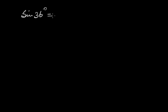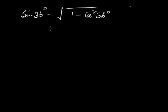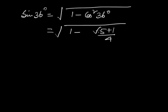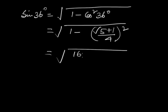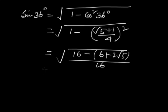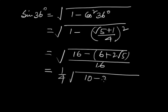Now for sin 36°: using sin²θ + cos²θ = 1, sin 36° = √(1 − cos²36°) = √(1 − [(√5 + 1)/4]²) = √((16 − (6 + 2√5))/16) = (1/4)√(10 − 2√5).